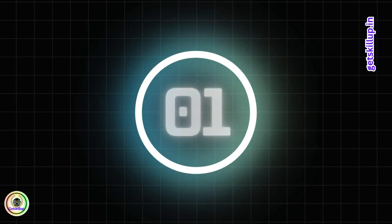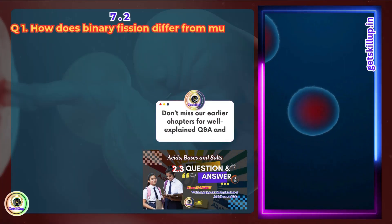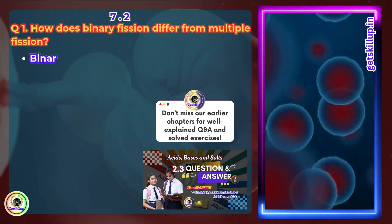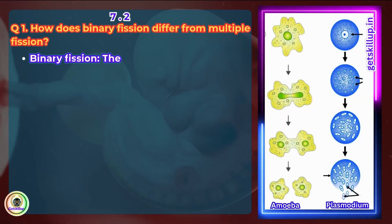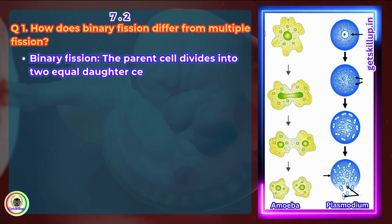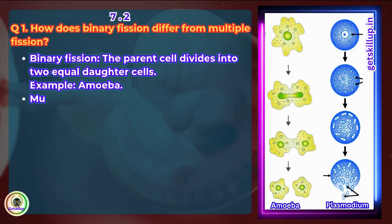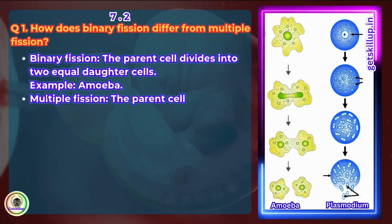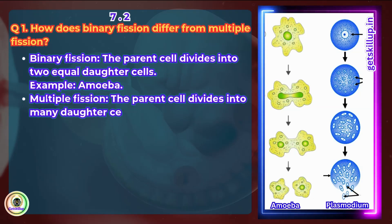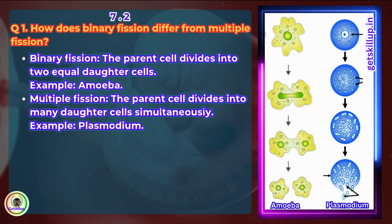Question 1: How does binary fission differ from multiple fission? In binary fission, the parent cell divides into two equal daughter cells — for example, Amoeba. In multiple fission, the parent cell divides into many daughter cells simultaneously — for example, Plasmodium.